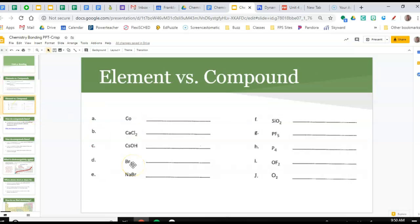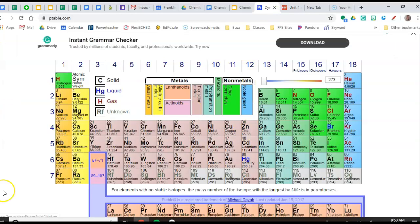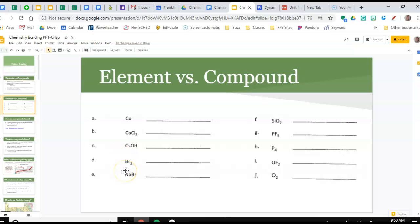Now on this slide we're going to differentiate the two. Looking at CO - if you come to the periodic table, one big indicator that it's an element is that it has a capital C and lowercase o. That usually indicates it's one element. When you have multiple capitals, that indicates two or more elements. So I would write E for element or C for compound.